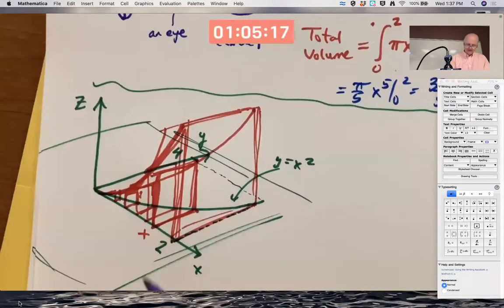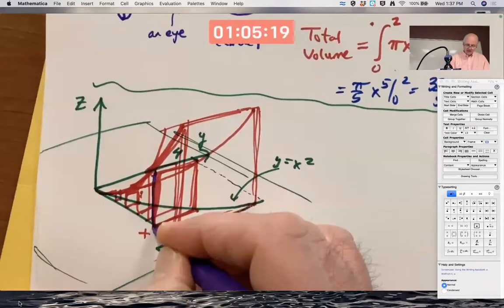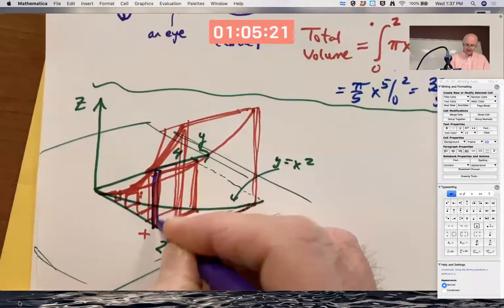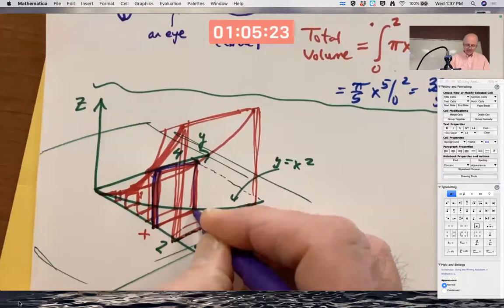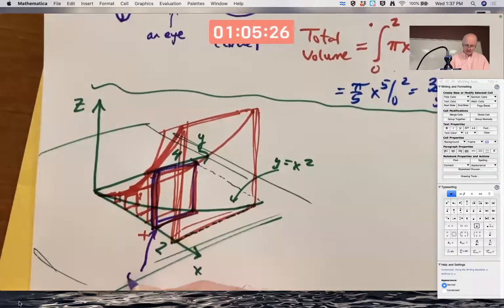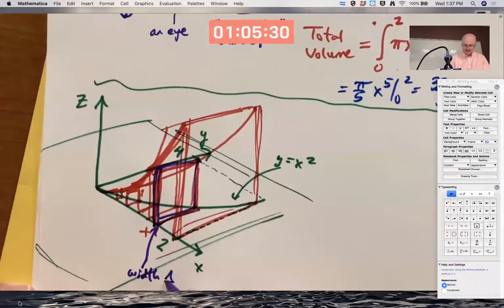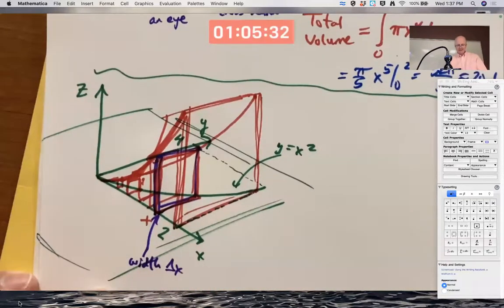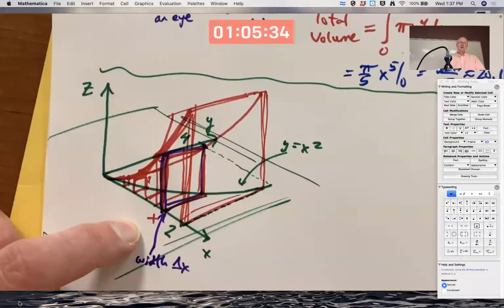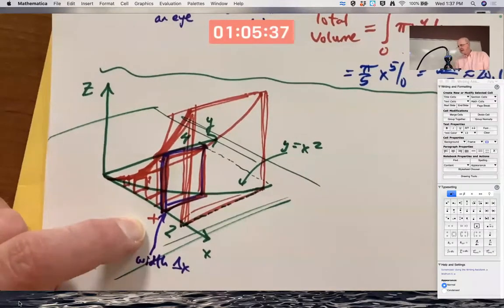Again, slice it. Your typical cross-section is going to be a thin slice with a certain width that's small. Call it delta X. That, by the way, is an X. It's not a plus sign. I drew it kind of slanted.